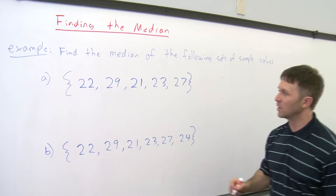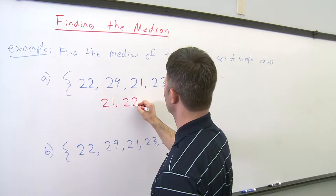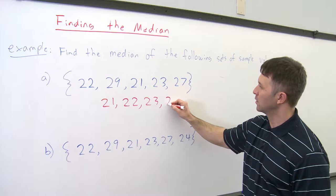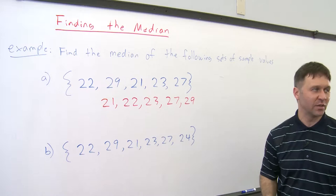So to find the median of this first set, we're going to list the values in order of increasing magnitude. So let's list them. We have 21, 22, 23, 27, and 29.